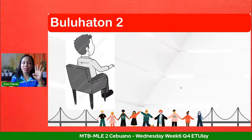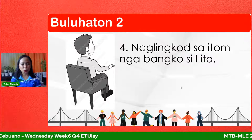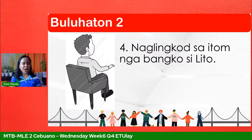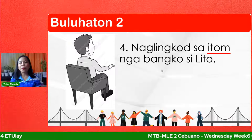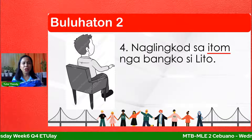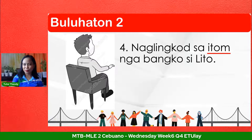Number four: naglingkot si Lito sa itong nga bangko. Tanawa — naglingkot si Lito sa itong nga bangko. Ang punghulagway kay itong — itong nga bangko. Ang punghan kay bangko, gipaila ang bangko pinaagi sa kulor nga itong. Parehasan ako ang gilingkuran — itong sa kini ang akong bangko.